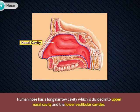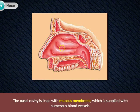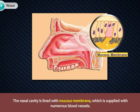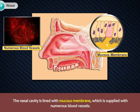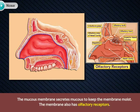The human nose has a long narrow cavity which is divided into the upper nasal cavity and the lower vestibular cavities. The nasal cavity is lined with a mucous membrane which is supplied with numerous blood vessels. The mucous membrane secretes mucus to keep the membrane moist, and the membrane also has olfactory receptors.